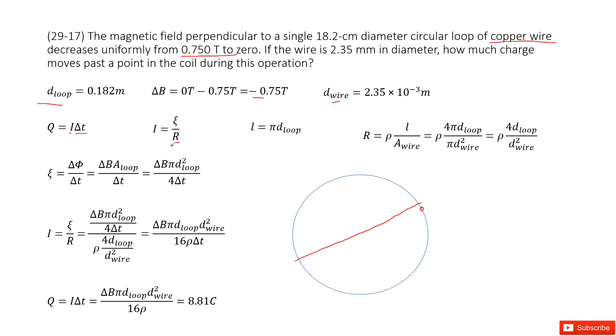How can you find the resistance for this loop? You may use ρ times L divided by A - the cross-sectional area for this wire. So L is the length for this loop, for this wire.